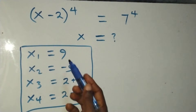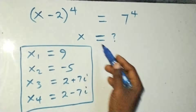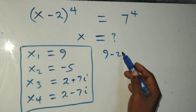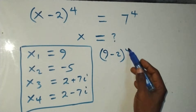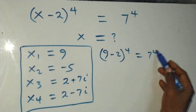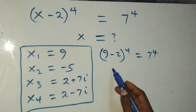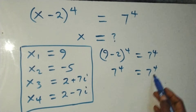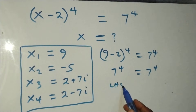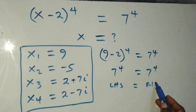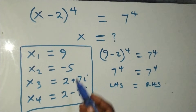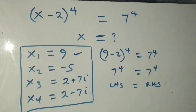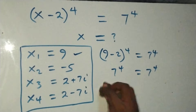We now check our solutions. When x equals 9, substituting gives (9 minus 2) to the power 4 equals 7 to the power 4, which is 7 to the power 4 equals 7 to the power 4. Left hand side equals right hand side, so x equals 9 satisfies the equation.